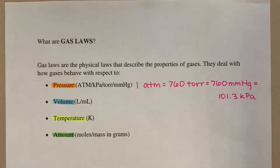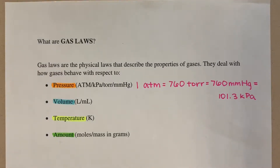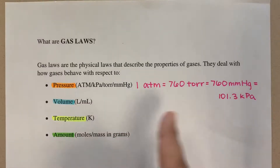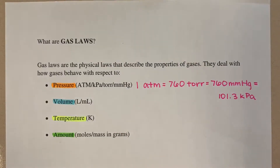So what are gas laws? Gas laws are the physical laws that describe the properties of gases. They deal with how gases behave with respect to pressure, measured in atm, kilopascal, torr, and millimeters of mercury. And on the right here there are conversions. Volume, which is measured in liters and milliliters. Temperature measured in Kelvin. And amount, which is measured in moles and mass.